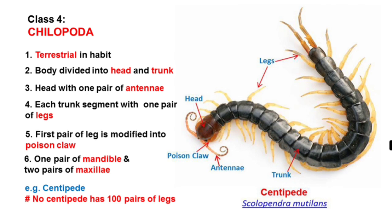Class 4 is Chilopoda. Animals belonging to Chilopoda are terrestrial in habit. The body is divided into head and trunk. The head has one pair of antennae. Each trunk segment has one pair of legs. The first pair of legs is modified into a poison claw. They have one pair of mandibles and two pairs of maxillae. The example is the centipede.